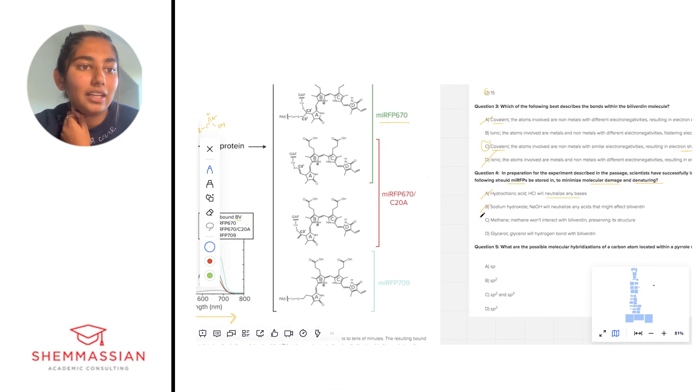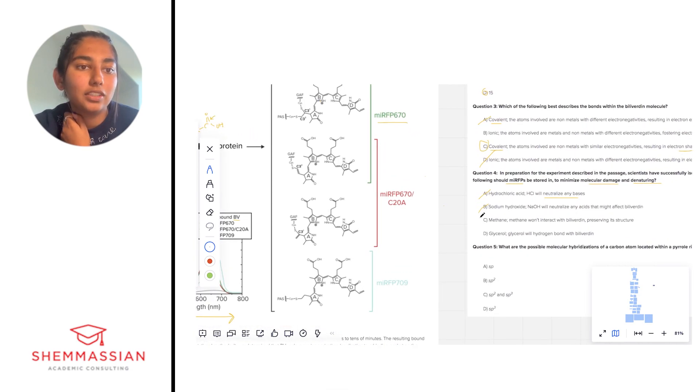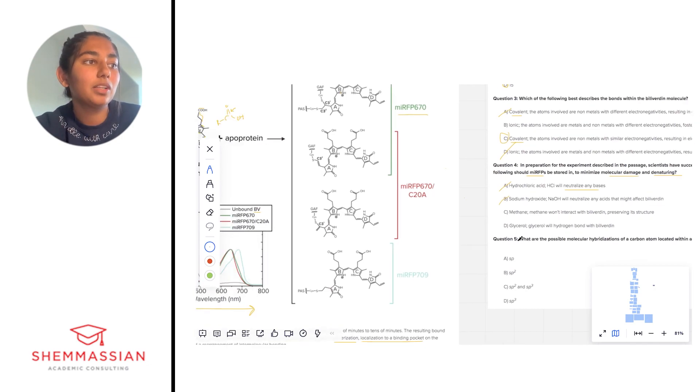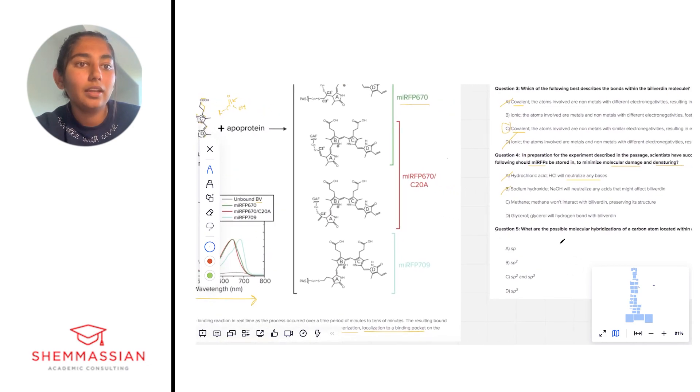C, methane. Methane won't interact with BV preserving its structure. Methane is incredibly nonpolar—it's just carbons and hydrogens. It's true, this is potential like it won't be charged and it won't protonate or deprotonate the molecule. However, this may mess with some of the dipoles and hydrogen bonding that we have seen in the BV molecule that is able to happen.